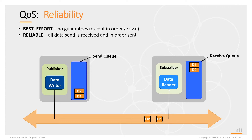On the data reader side, data is received into a receive queue and remains there until the application takes it. If D3 is then sent and lost by the network, and before DDS detects the loss your application has sent D4 and D5, those will appear in the receive queue but grayed out — indicating they are not yet available to the application because D3 is missing.